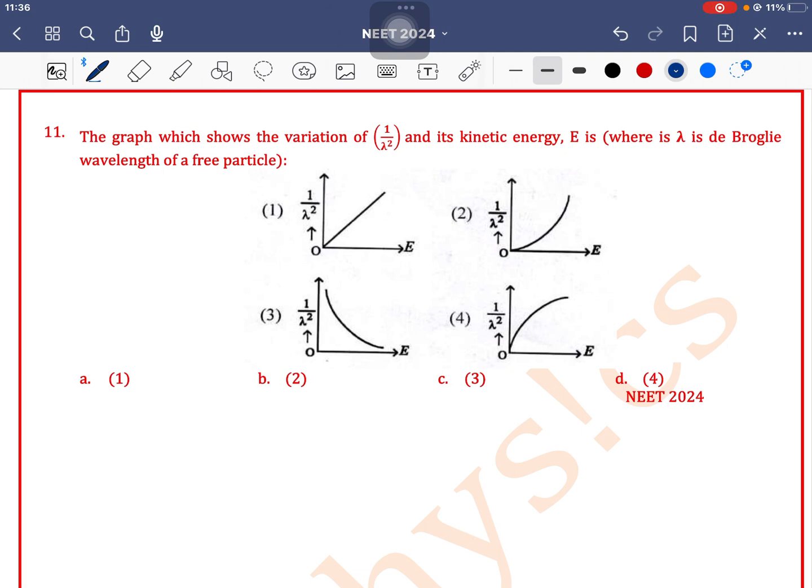We know that de Broglie wavelength can be written as lambda is equal to H by P. As P is equal to square root of 2m kinetic energy, so lambda is equal to H by square root of 2m kinetic energy.